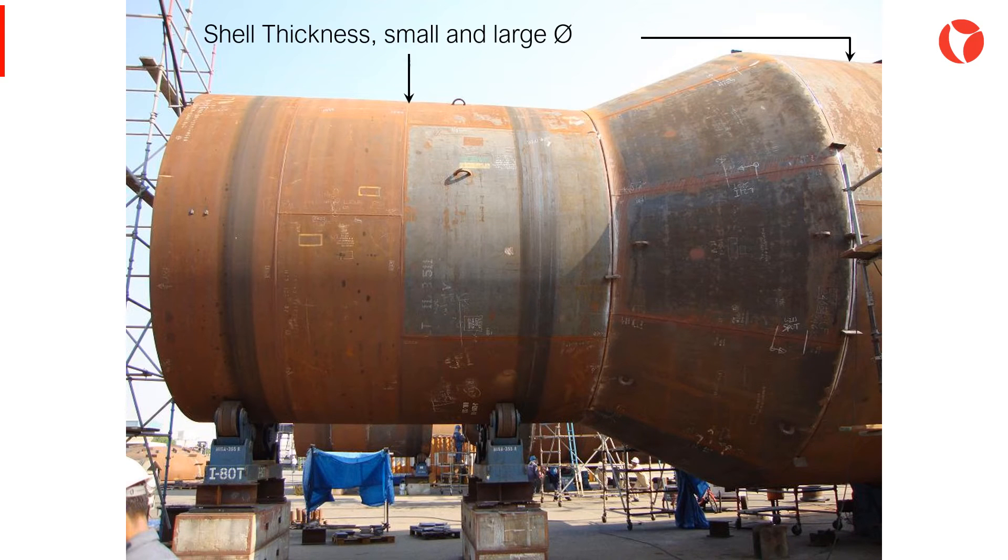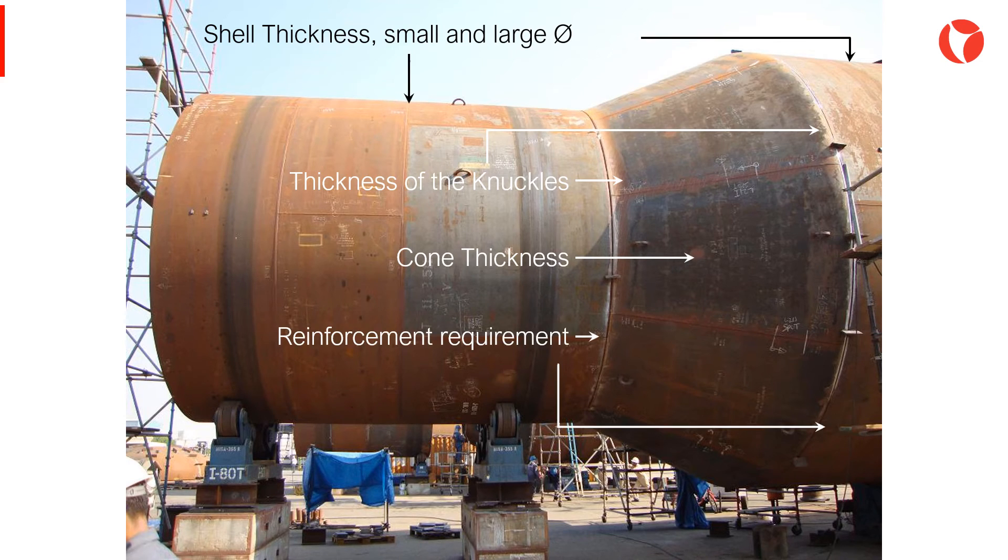The shell thicknesses, due to internal and external pressure for both large and small diameters. The thickness of the knuckles. These elements are included to avoid overstresses in the area. The cone thickness itself, due to internal and external pressure. And reinforcement requirements for the cone-to-shell joint.